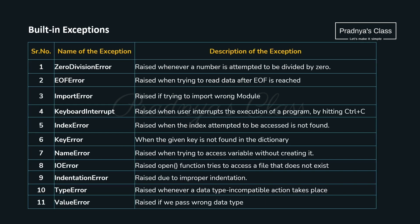Look at the list of built-in exceptions. ZeroDivisionError will fire when we try to divide a number by 0. If you try to import a wrong module, you will get ImportError. If the specified index doesn't exist and you try to access it, you will get IndexError. In a dictionary, if the key is not present, you will get KeyError. NameError will fire when you try to access a variable without initializing a value to it. In case of improper indentation, you will get IndentationError. If we pass the wrong data type value, ValueError will get fired.